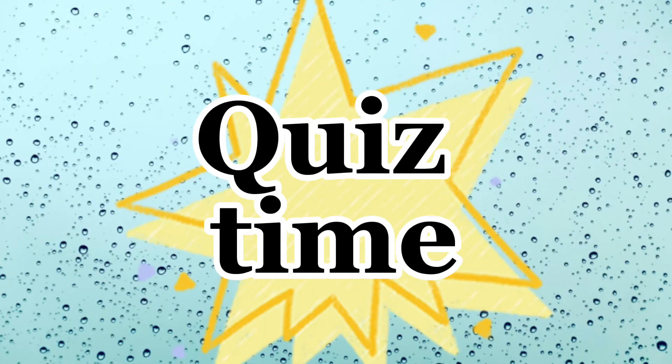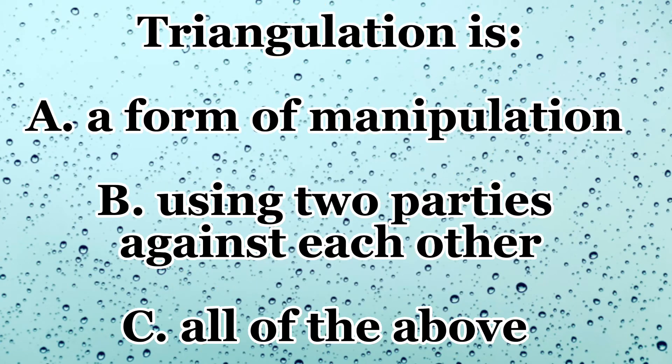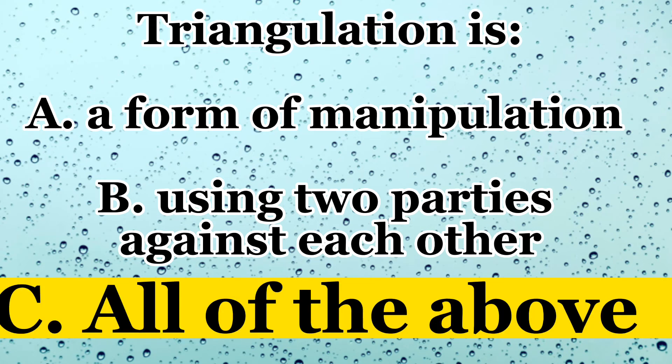Time to test your knowledge. Triangulation is: A — a form of manipulation; B — using two or more parties against each other; or C — all of the above. Correct! All of the above. Great job.